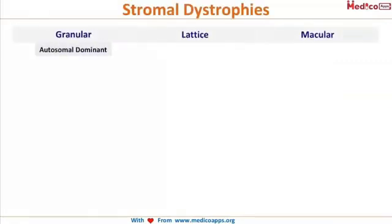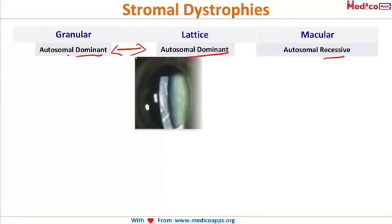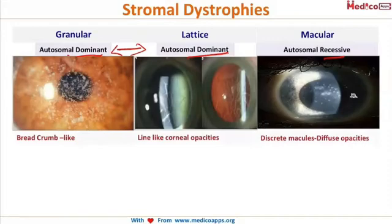Looking at this slide: granular and lattice corneal dystrophies are both autosomal dominant. The only recessive type is macular corneal dystrophy.